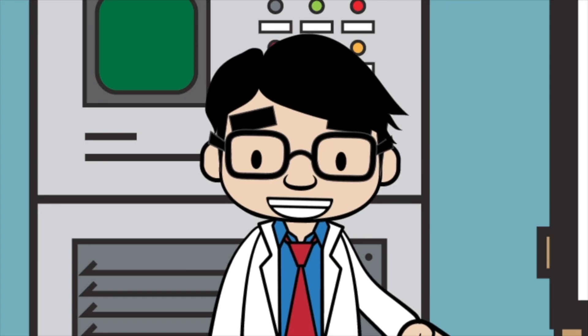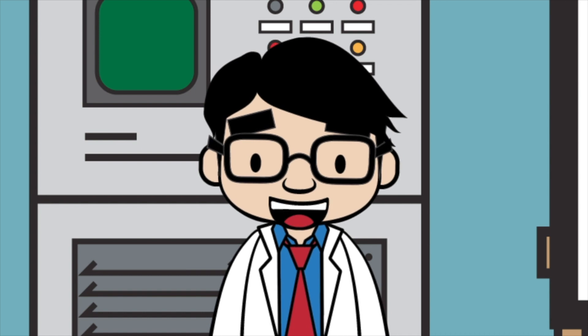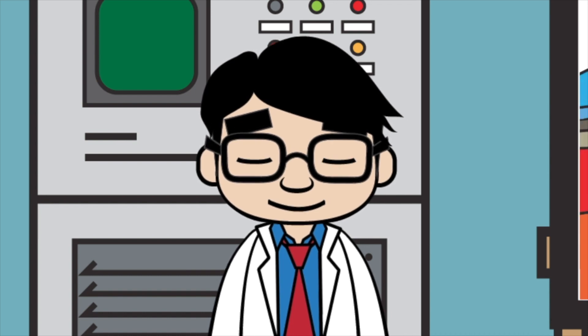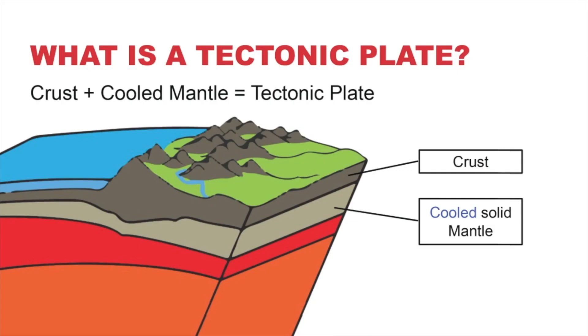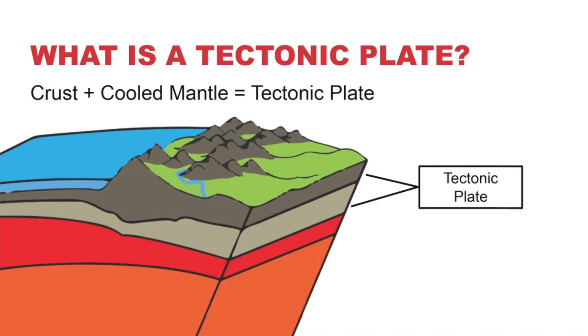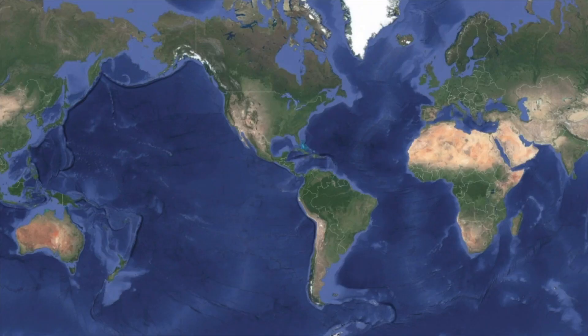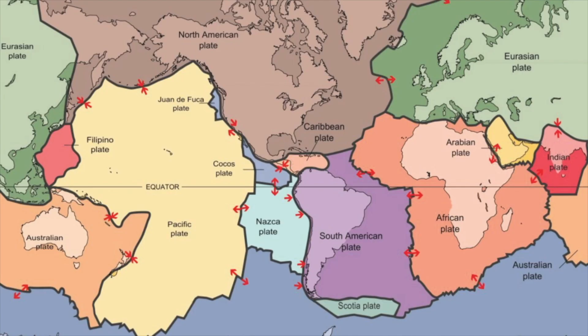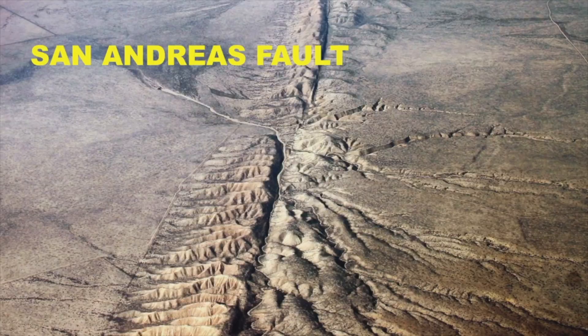Let's move on to tectonic plates. What is a tectonic plate? If you take some crust and some cooled mantle, you have a tectonic plate. If you look at a topographic map of the world, you can see the boundaries of all the tectonic plates, which are outlined by trenches, mountain ranges, volcanoes, and ridges, such as the San Andreas Fault in California.